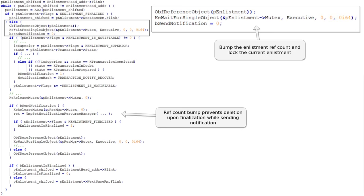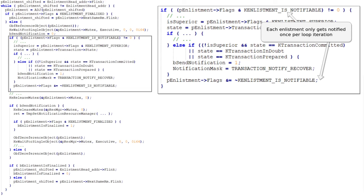Analyzing the else case, the code is going to do something with the enlistment. It bumps the ref count, waits on the mutex of the enlistment to make sure it is the exclusive code touching it, and it sets some boolean flag — which we called bsendnotification — to 0 for now. We don't know what it is quite yet. Next, it has some logic that is going to decide whether or not it sets the send notification boolean to 1.